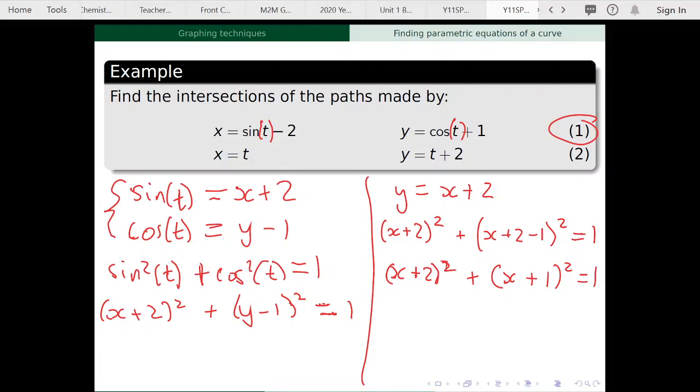Now if I want to solve this for the intersections, I'm going to have to expand. Let's expand first. So we get x squared plus 4x plus 4 plus x squared plus 2x plus 1, just using my way to expand binomials, or perfect squares in this case. That all equals 1.